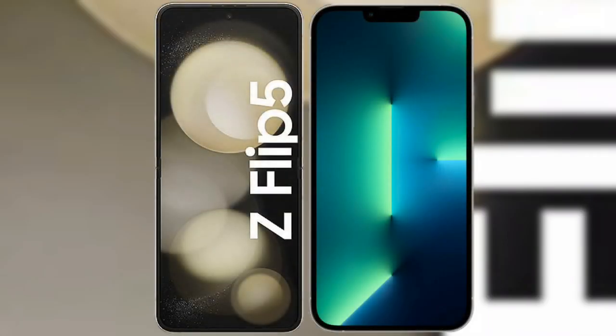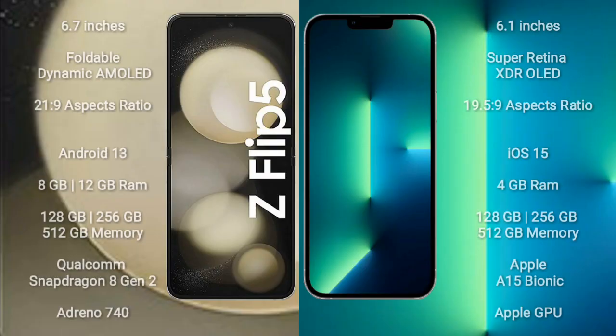I will compare the new Samsung Galaxy Z Flip 5 with iPhone 13. Samsung Galaxy Z Flip 5 comes with a 6.7-inch foldable Dynamic AMOLED display and an aspect ratio of 21:9. iPhone 13 comes with a 6.1-inch Super Retina XDR OLED display and an aspect ratio of 19.5:9.